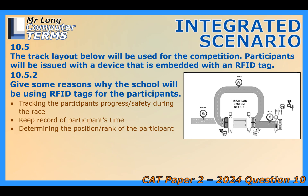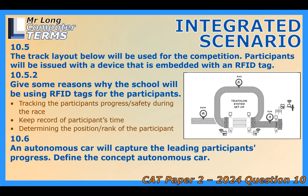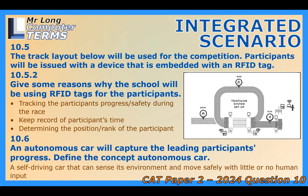For filming the leaders, the sources mention autonomous cars — self-driving cars filming the race. An autonomous car here is basically a self-driving vehicle that uses a whole suite of sensors — LiDAR, radar, advanced cameras — to see its surroundings, predict what's happening, and drive itself safely with minimal or even zero human input. The advantage for filming is precision: it can maintain a perfectly steady speed and distance from the lead athlete, much better than a human driver, especially over a long race. That means smoother, higher quality footage without worrying about driver fatigue or jerky movements.